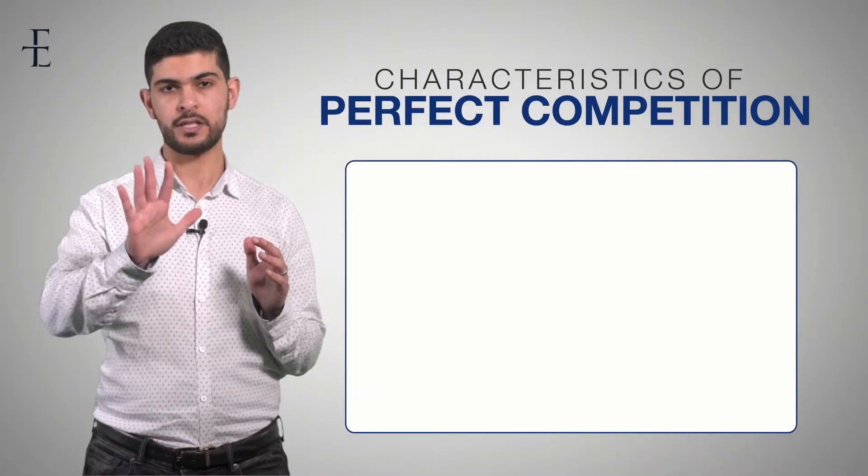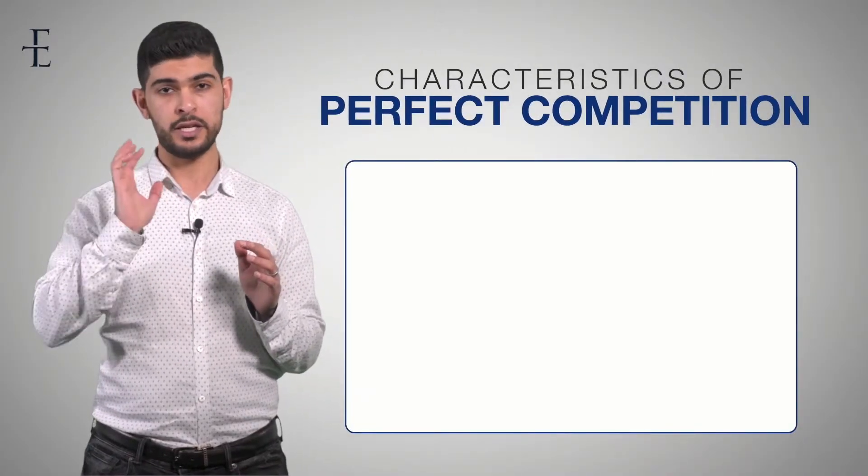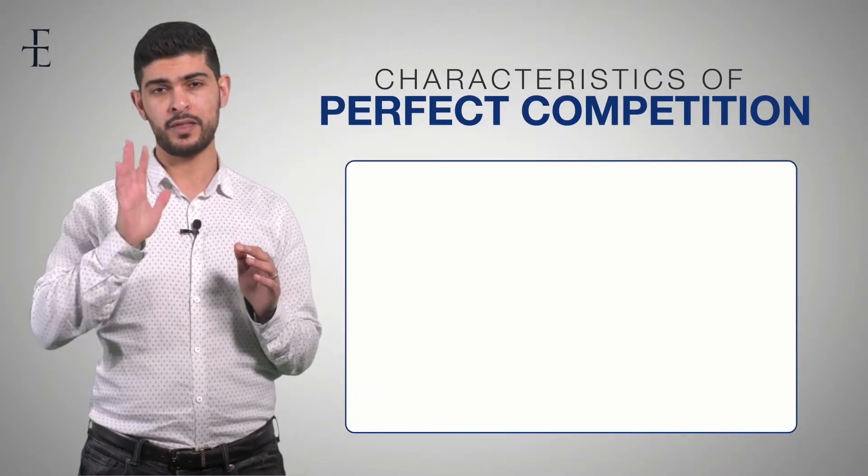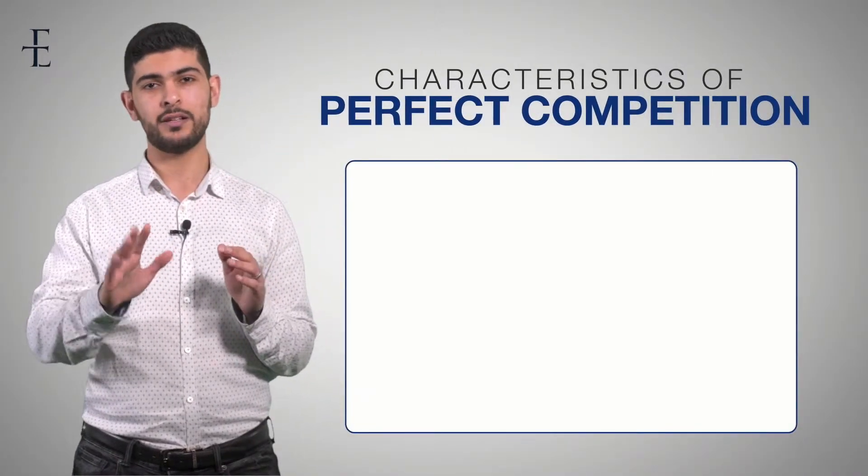Every single market structure that you study, from perfect competition all the way through to a monopoly, will always have five key characteristics. And you need to know these like the back of your hand.